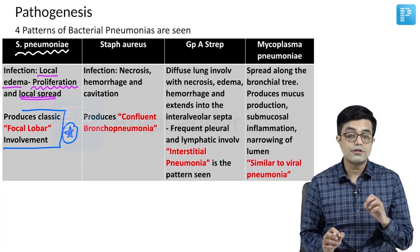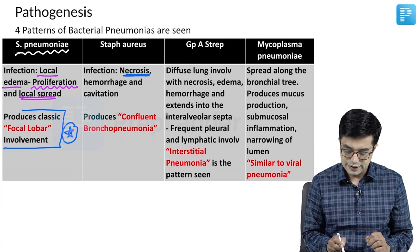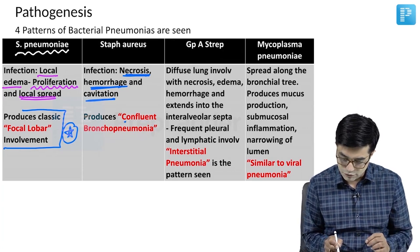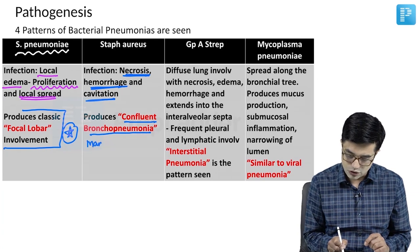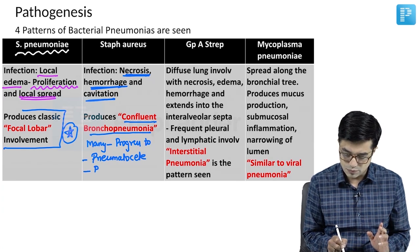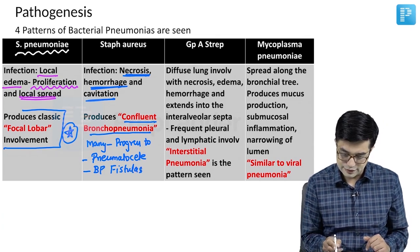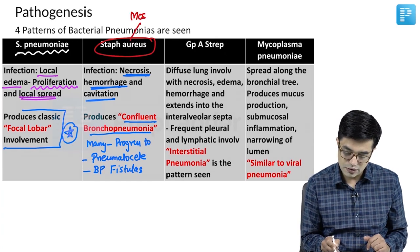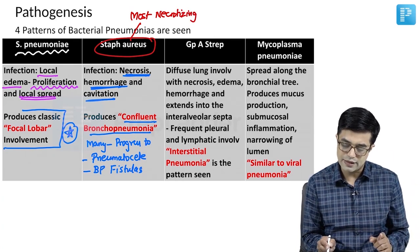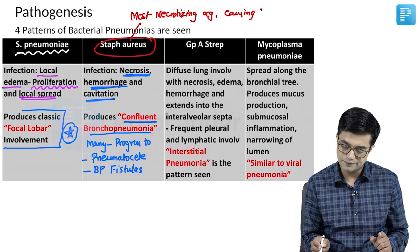Staph aureus has a tendency to cause necrosis, hemorrhage, and cavitation. It destroys the alveolar septum, producing confluent areas — so it produces confluent bronchopneumonia. Many patients can also progress to pneumatocele formation, and can also progress to bronchopleural fistulas. Staph aureus is considered the most necrotizing organism causing pneumonia in children. So if asked the most common cause of necrotizing pneumonia in children, the answer is Staph aureus.